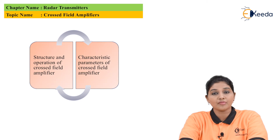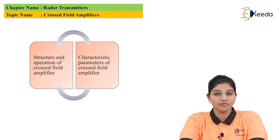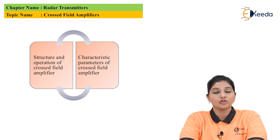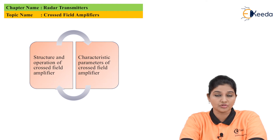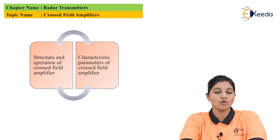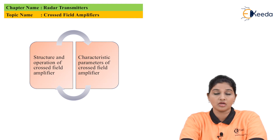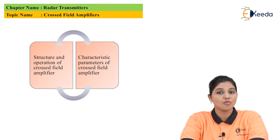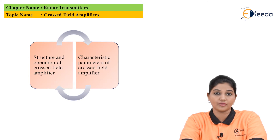The cross-field amplifier is similar to the magnetron oscillator and is characterized by electric and magnetic fields perpendicular to each other. The cross-field amplifier provides high efficiency of approximately 40–60%, and it achieves this high efficiency at low operating voltage. It also provides a broad range of bandwidth and high peak power, along with moderate gain.